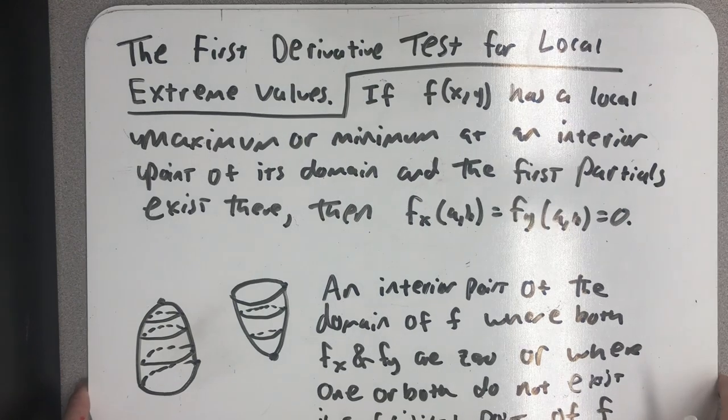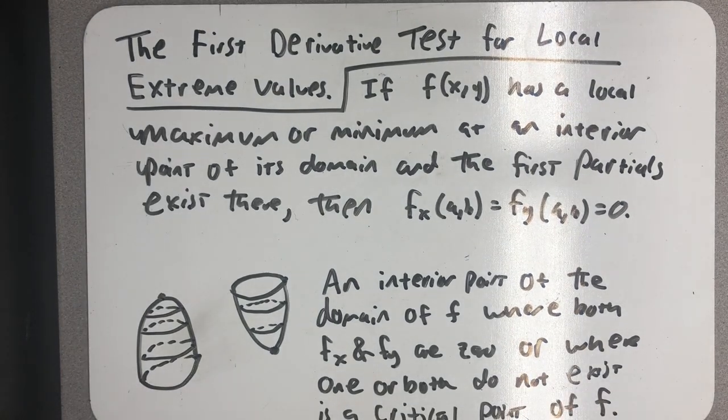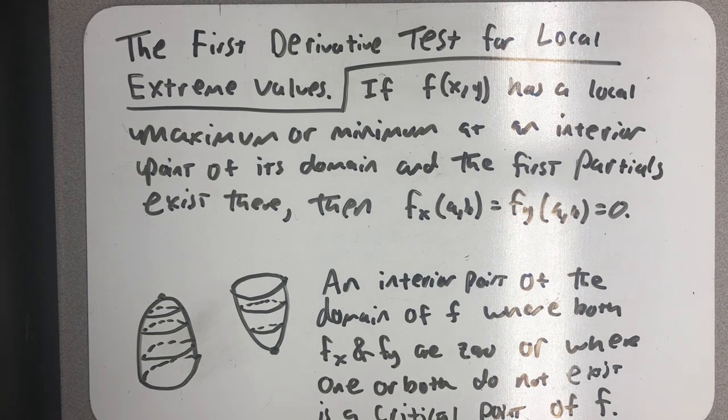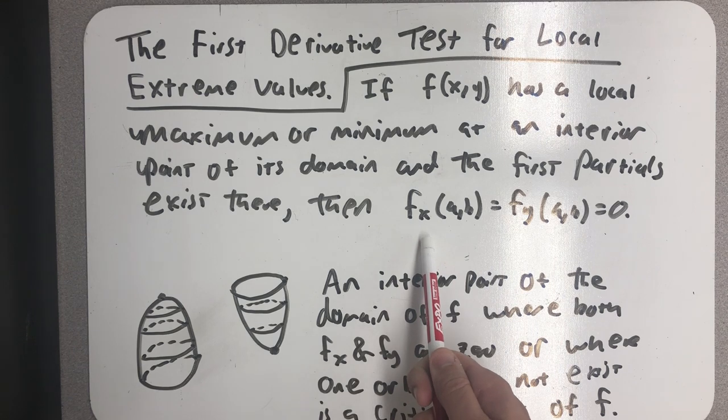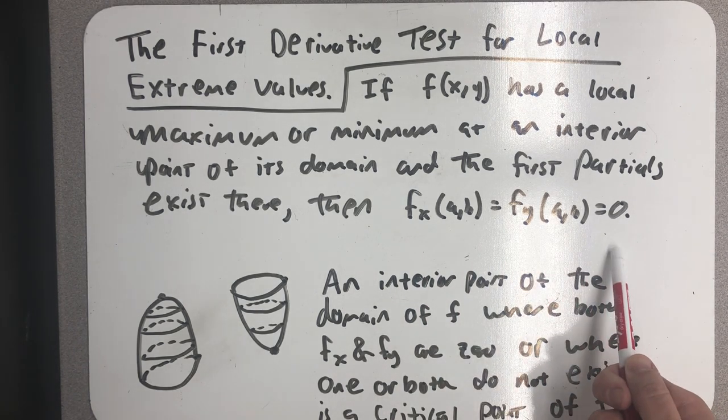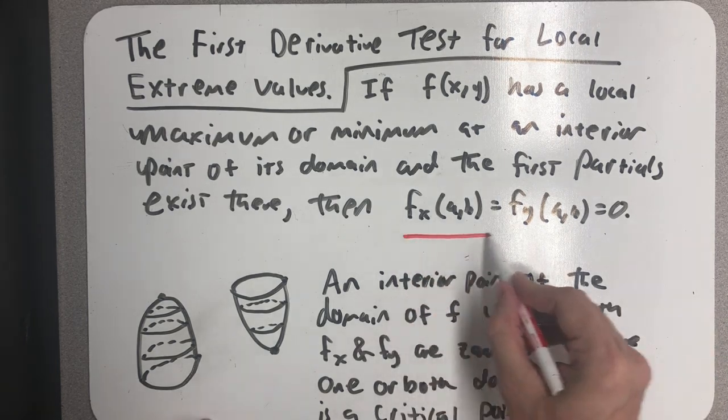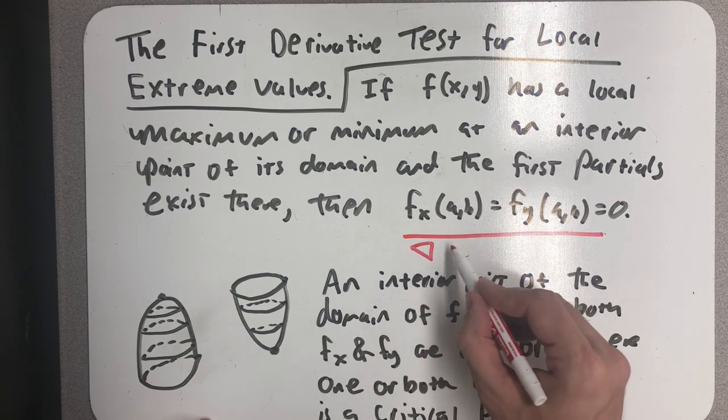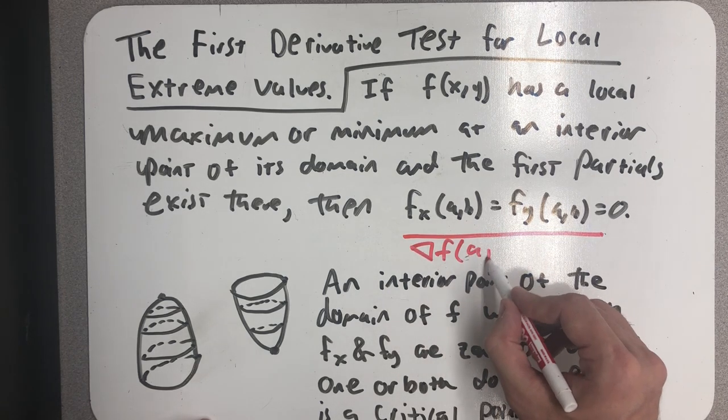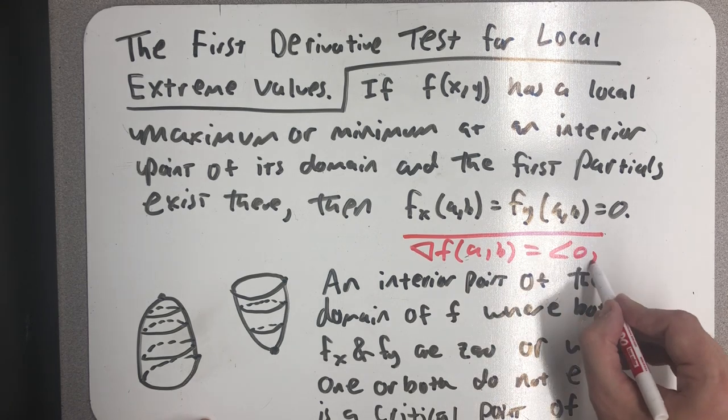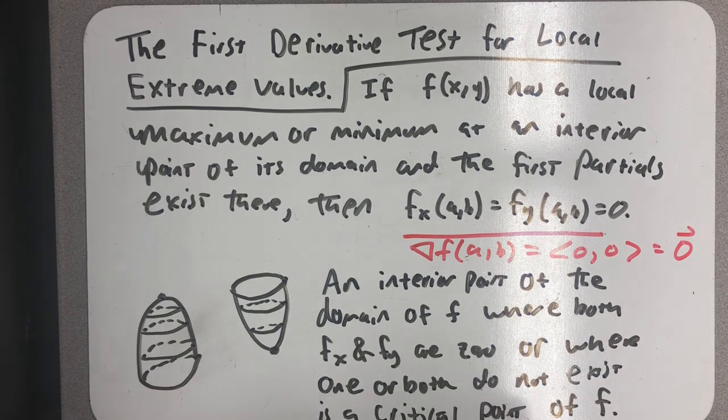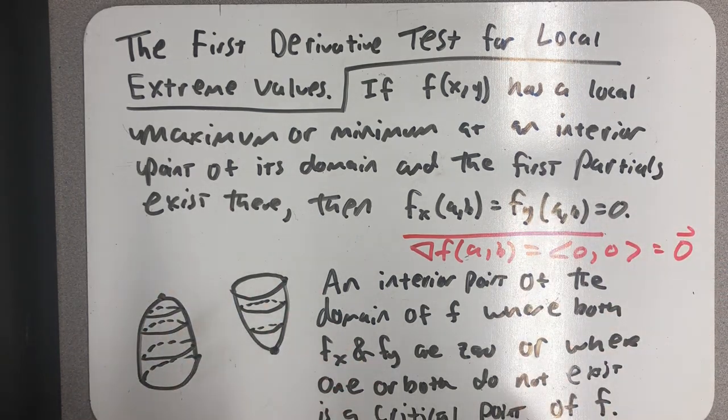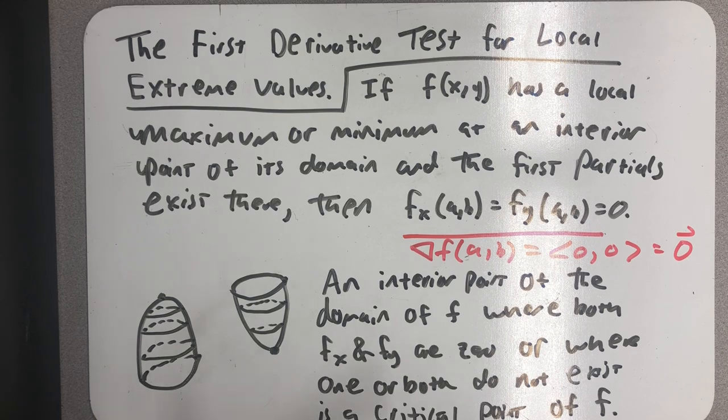Another idea similar to what we had in Calc 1 is the first derivative test for local extreme values. If f(x, y) has a local maximum or minimum at an interior point of its domain and the first partials exist there, then the partial with respect to x at (a, b) and the partial with respect to y at (a, b) are identically 0. Another way to think about this claim is I'm at a point (a, b), both partials are equal to 0. This means the gradient vector at (a, b) is the 0 vector.